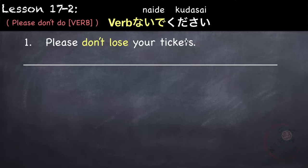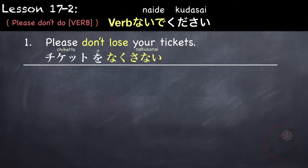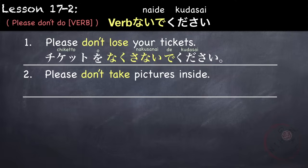For example, 'please don't lose your tickets.' Our verb is lose — nakushimasu — so first we change it to nai form: nakusanai, followed by de kudasai. Chiketto wo nakusanai de kudasai. Another example: 'please don't take pictures inside.' Nakade shashin o toranai de kudasai — our verb torimasu becomes toranai.